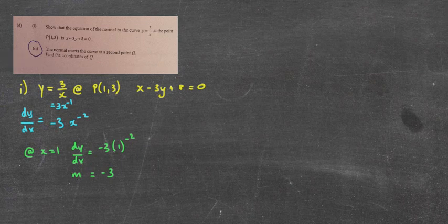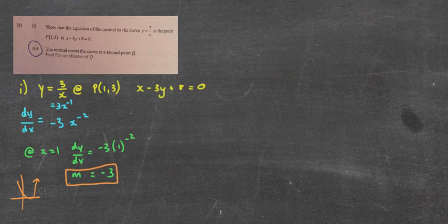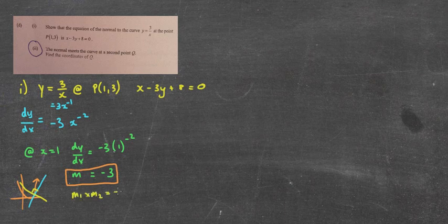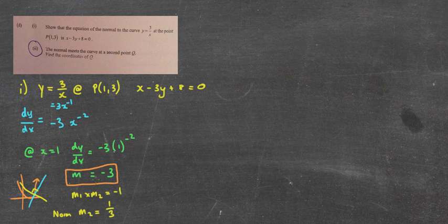Remember, that's the gradient of the tangent, not the normal. If I have a little parabola, the tangent touches at one point. What we're looking for is the gradient of the normal, which is perpendicular to the tangent. That means m1 times m2 equals negative 1, or it's a negative reciprocal. So my gradient of the normal is going to be 1 over 3, because it's the negative reciprocal of negative 3.